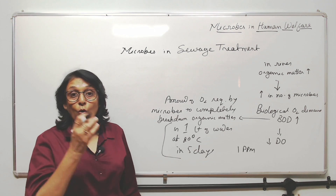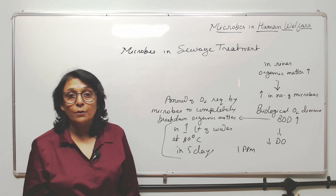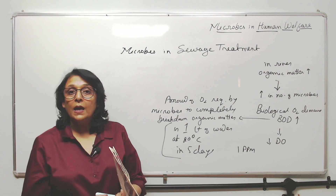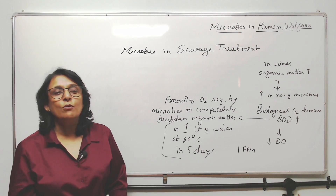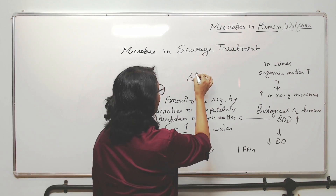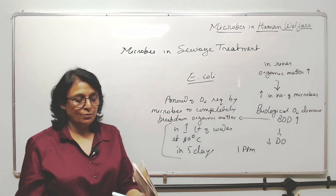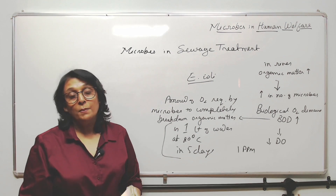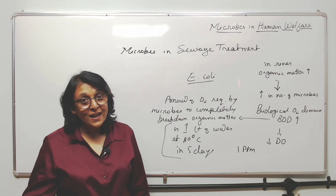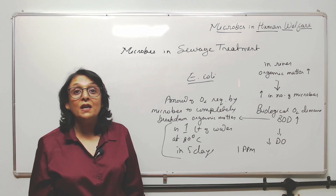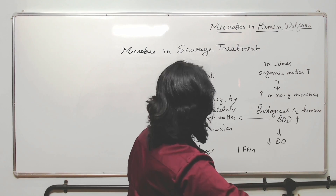If BOD is more than 1 ppm, that means the water is polluted with organic matter. And how do you know it is polluted with sewage? You can find E. coli. If you detect E. coli in water, you can conclude that it is polluted with sewage, because E. coli is present in our alimentary canal and gets eliminated along with fecal matter. So now, how do we treat this sewage?